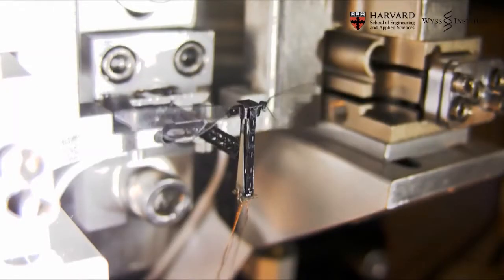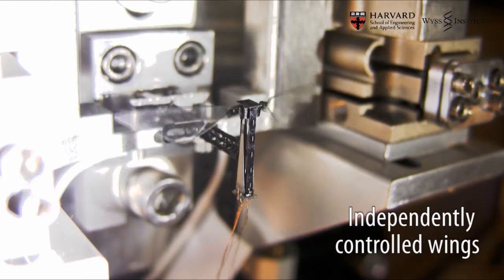Currently, the engineers at RoboBee are trying to overcome the problems caused by the robot's weight restrictions. Particularly, they need to learn how to move the power supply and microchip on board the RoboBee so that it can operate autonomously.